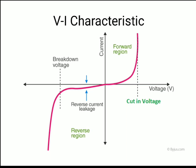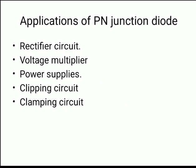There are many applications of a p-n junction diode. It is used in rectifier circuits, which convert AC into pulsating DC. It is used in voltage multipliers to increase voltage, and in power supplies, which use rectifiers consisting of p-n junction diodes. It is also used in clipping and clamping circuits for wave shaping.